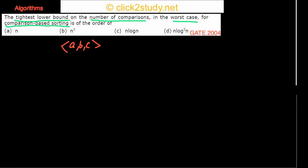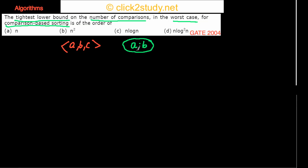In the decision tree model, you start at the root. At every node you make a comparison, since we are doing comparison-based sorting. We compare a with b — written as a:b — and make a decision. If a ≤ b, we go to the left subtree; if a > b, we go to the right subtree.